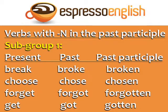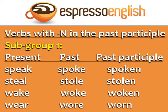Subgroup one: Break, broke, broken. Choose, chose, chosen. Forget, forgot, forgotten. Get, got, gotten. Speak, spoke, spoken. Steal, stole, stolen. Wake, woke, woken. Wear, wore, worn. In this subgroup, the vowel changes to O in the past and past participle.